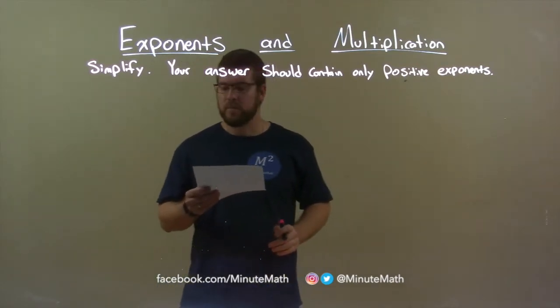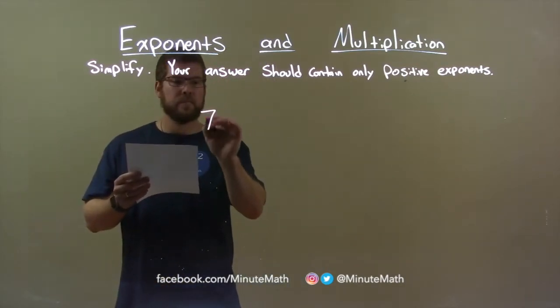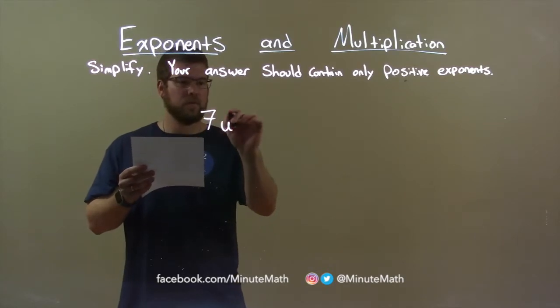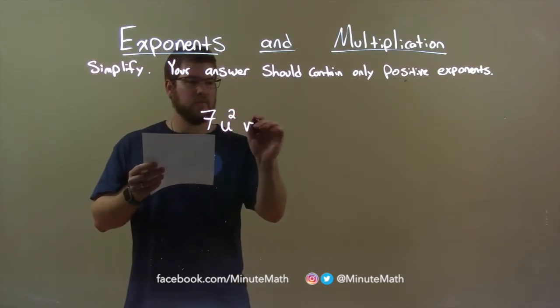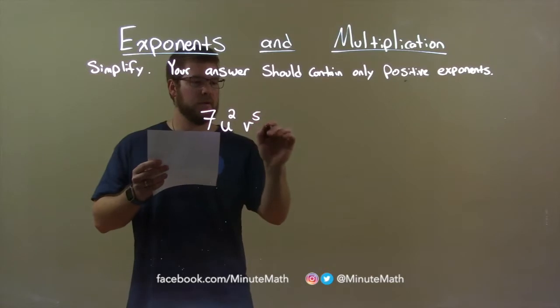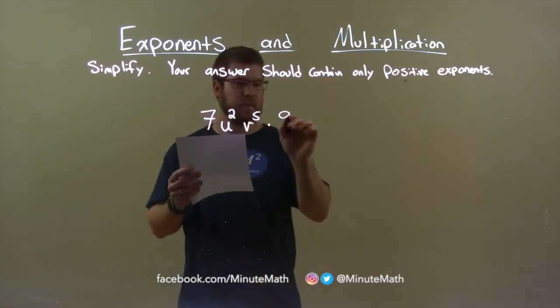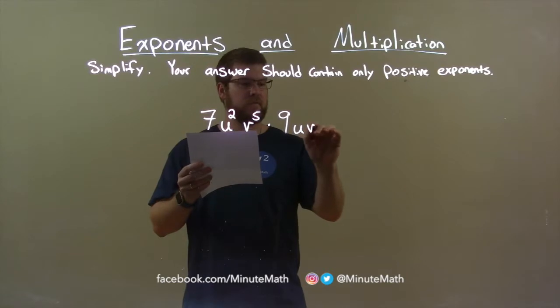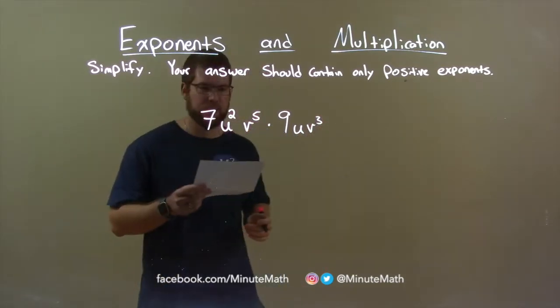So if I was given this problem, 7u squared v to the 5th power times 9uv to the 3rd power, okay?